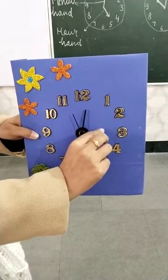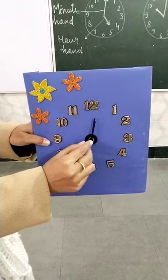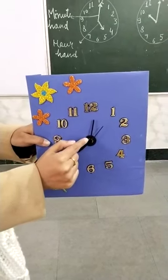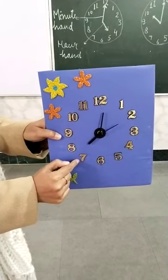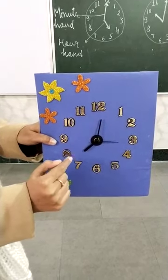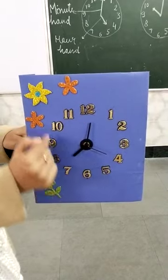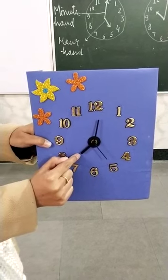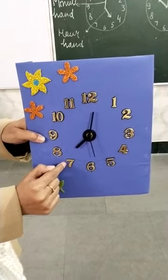Now I am moving the hour hand from three to seven. The minute hand is again on twelve. Where is the hour hand? The hour hand is on seven, so the time is seven o'clock. You always check that the minute hand is on twelve and then see which number the hour hand points to. It is pointing towards seven, that means it is seven o'clock.